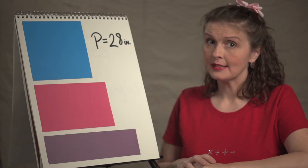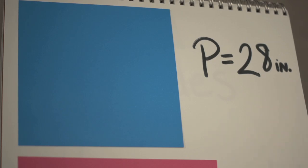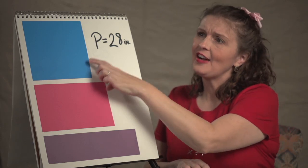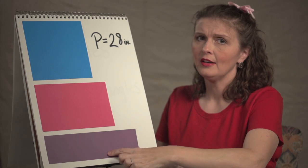Here we have three rectangles, all that have a perimeter of 28 inches. So the question is, if I know the perimeter, can I find the area?